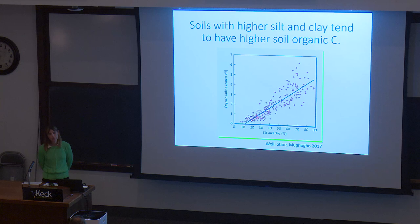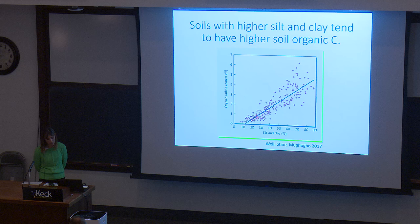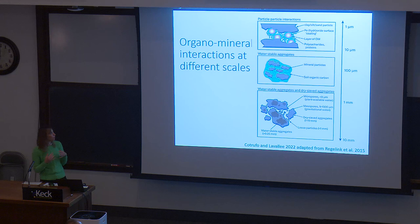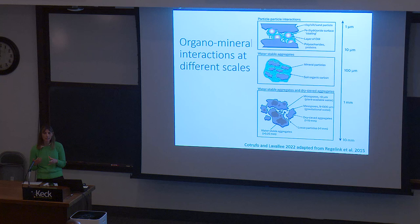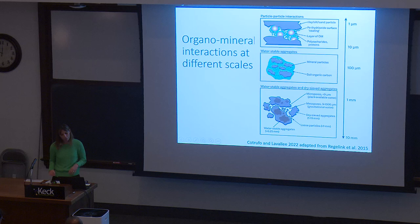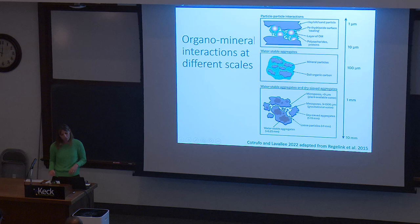Soils with higher silt and clay content generally have higher soil organic carbon because those minerals help provide protection against decomposition. We also have organo-mineral interactions at a larger scale, where aggregates form and occlude particulate organic matter within them — another mechanism of protection. The larger the aggregates, the less stable and less protective they become. At the micro-aggregate scale, however, they can provide meaningful protection to particulate organic matter.